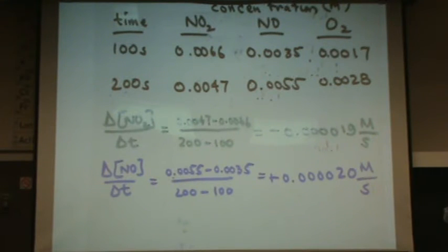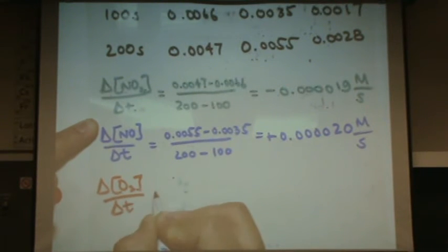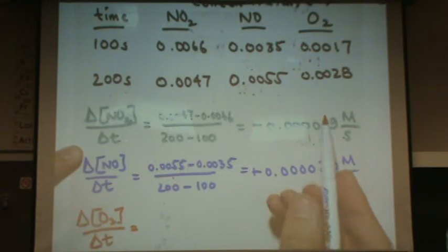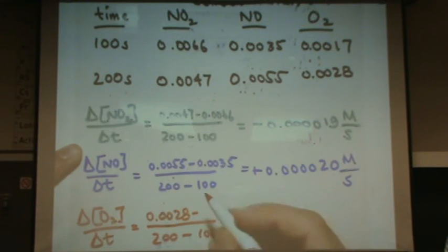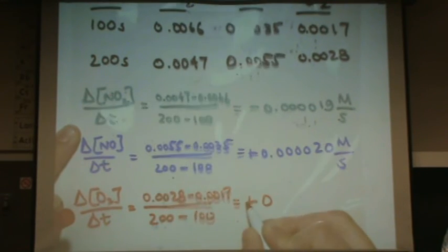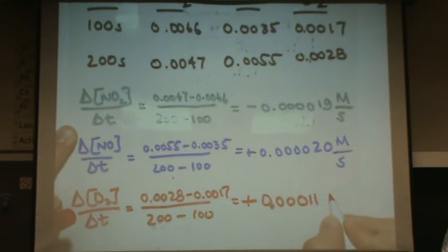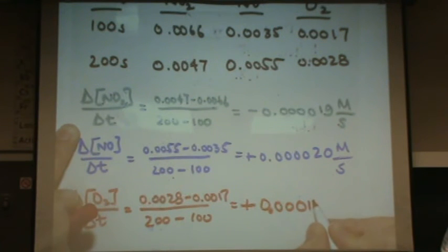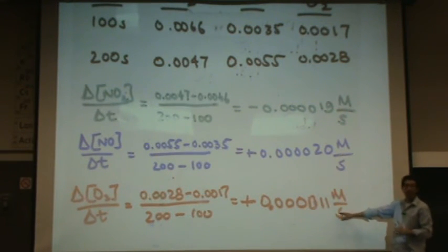I'm going to do it for the third molecule, which is also in the products. Change now for O2 over change in time. Now I'm going to read the first and the fourth column. So again, I'll just do 200 minus 100. The 200 goes with 0.0028. The 100 goes with 0.0017. And that equals, again, a positive 0.000011 molarity per second. So there's four zeros and then two ones for the last one.